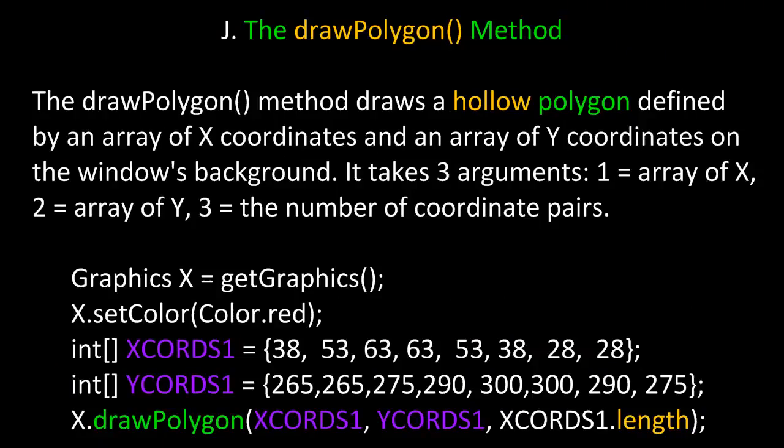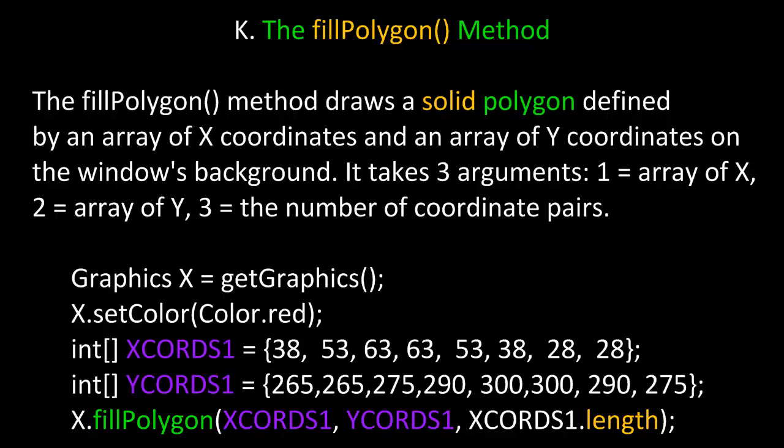Let's take a look at the drawPolygon method. The drawPolygon method draws a hollow polygon defined by an array of x-coordinates and an array of y-coordinates on the window's background. It takes three arguments: one, the array of x-coordinates; two, the array of y-coordinates; and three, the number of coordinate pairs. Similarly, fillPolygon draws a solid polygon defined by parallel arrays of x and y-coordinates. It also takes three arguments: the array of x, the array of y, and the number of coordinate pairs. Both are declared and called the same way, using the length attribute of either array to specify the number of x-y coordinate pairs.